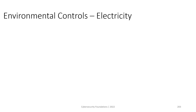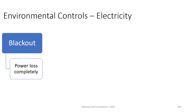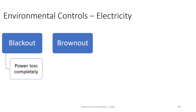For environmental control, starting with electricity hazards: one threat is a blackout, which is a power loss. This power loss can be compensated depending on its duration. For short-term power outage, we may use a UPS device. For long-term outage lasting hours or days, we should rely on a generator. Depending on whether you're dealing with short-term or long-term, you should select your response accordingly.